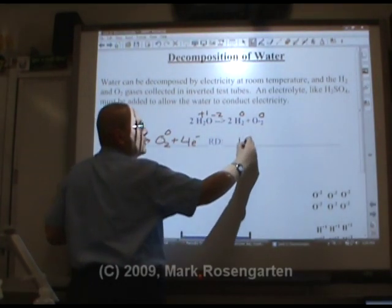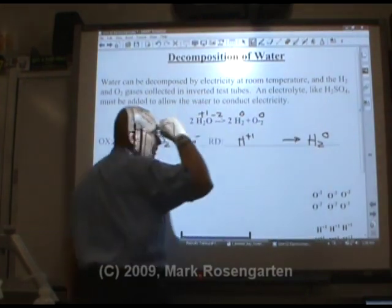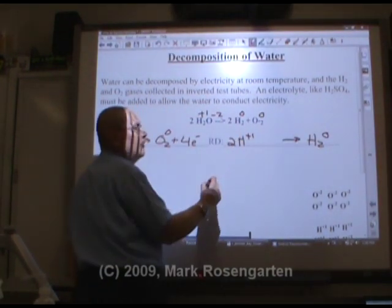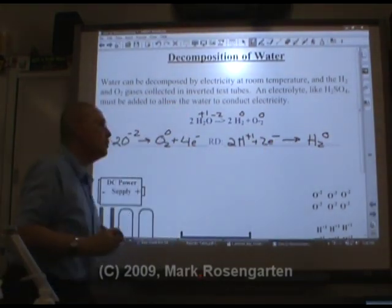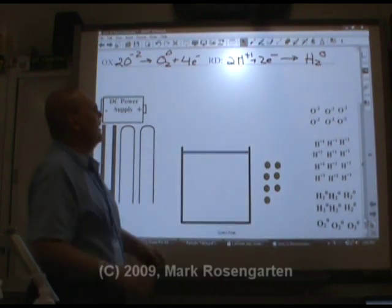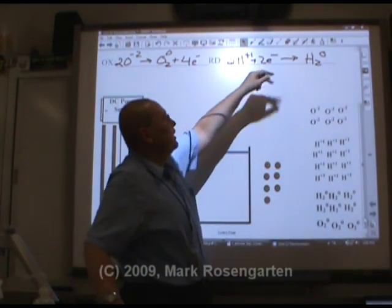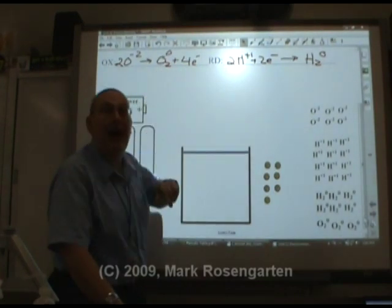The hydrogen goes from plus one to zero. Balance the Brinkelhoff. Two times plus one is plus two. I need minus two to cancel that out, so two electrons are gained. So can you see what's happening here? The hydrogen is going to be force-fed electrons from the battery, and the oxygen will have its electrons stripped by the battery.